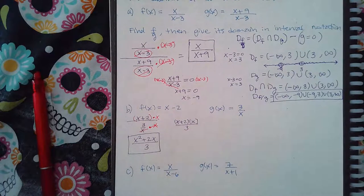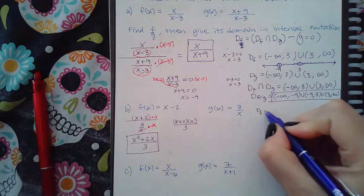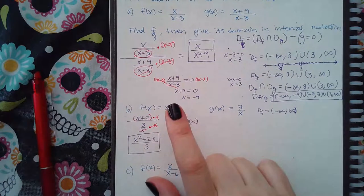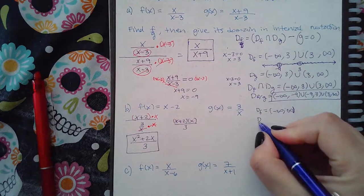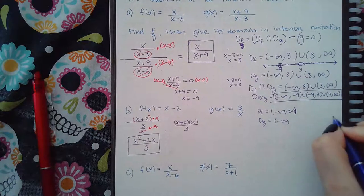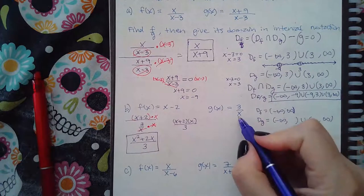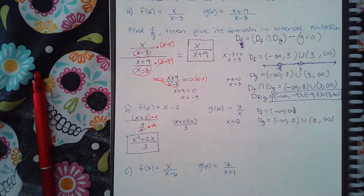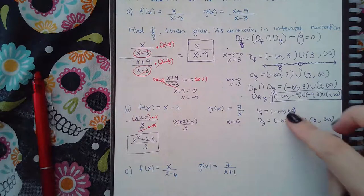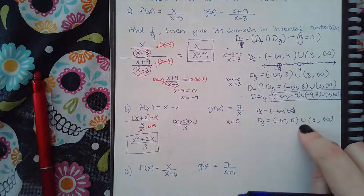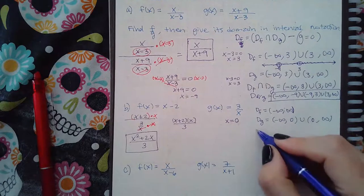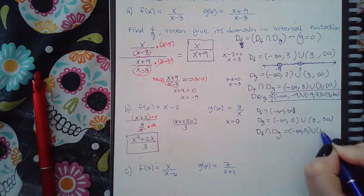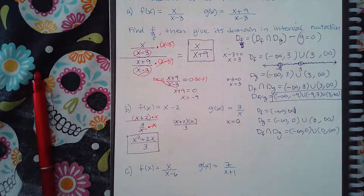For the domain: the domain of f is negative infinity to infinity because f is just a line — no denominator, no fractions, no square roots. The domain of g is negative infinity to infinity, but I remove any x values that make the denominator zero. Setting the denominator equal to zero gives x = 0, so x = 0 is not in the domain of g. Their intersection is everywhere except 0: negative infinity to 0, then 0 to positive infinity.